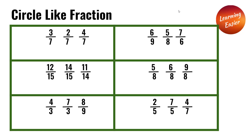6 over 9, 5 over 8, and 7 over 6 is an unlike fraction because all three of them have different denominators.